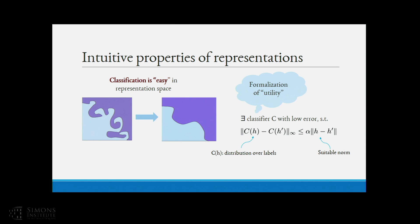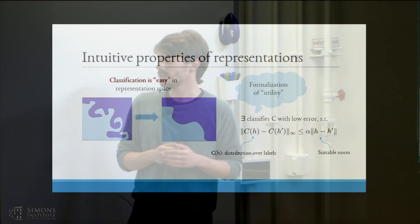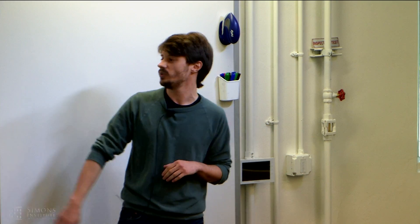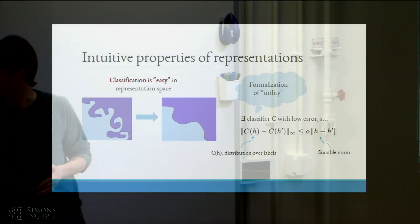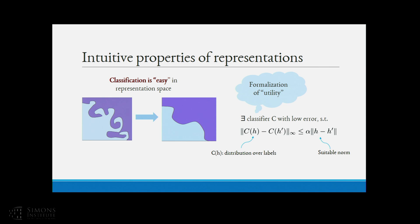Another intuitive property we want is some kind of utility from passing to the space of representations versus doing things directly on raw data. A minimal requirement is that classification actually makes sense and is easier in representation space. At minimum, for whatever classification task you're interested in, there should be a classifier which goes from representation space to a distribution over labels with low error. We also need it to be Lipschitz with respect to some appropriate norm over the representations.